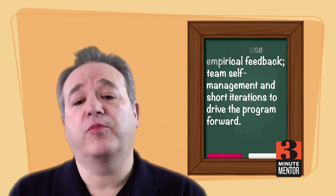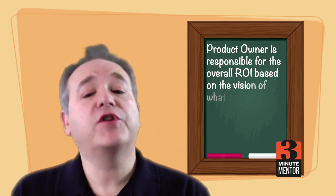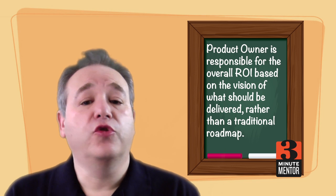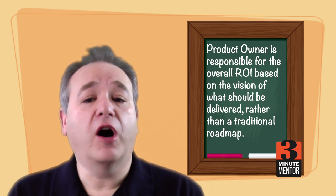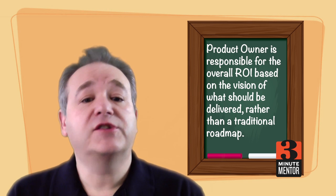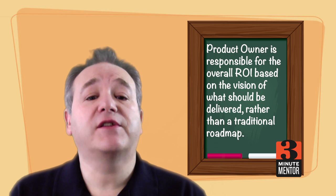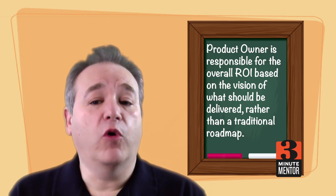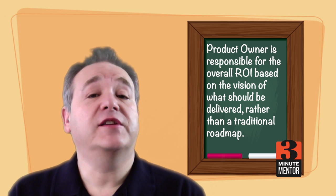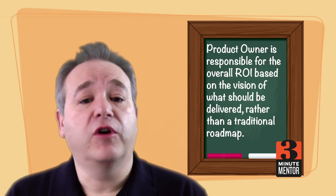Within the scrum there are three key roles. The first role is the product owner who is responsible for the overall ROI of the product. This often means they must prioritize the functions of the teams and what they're working on. This needs to be done based on a vision rather than a traditional roadmap that most development teams use.